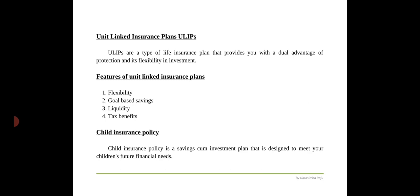The next benefit is goal-based savings. ULIPs are designed for long-term financial goals such as buying a house or funding your children's education, as they help you build a large corpus in a disciplined manner. When you invest for the long term, it is possible to absorb market risk and your money grows faster. The next benefit is liquidity — in case of emergencies, ULIPs allow you to partially withdraw money from your unit linked account, but only after a period of five years from the commencement date of the policy.